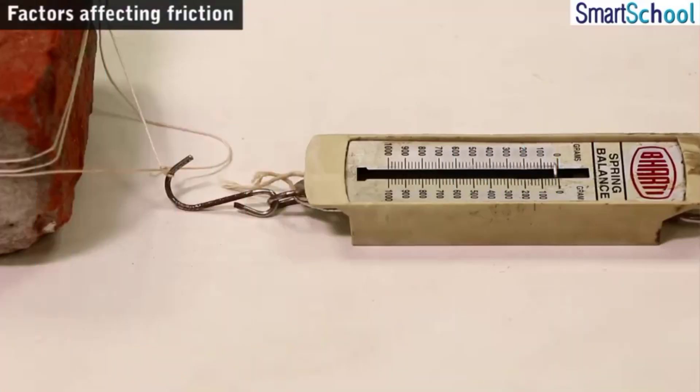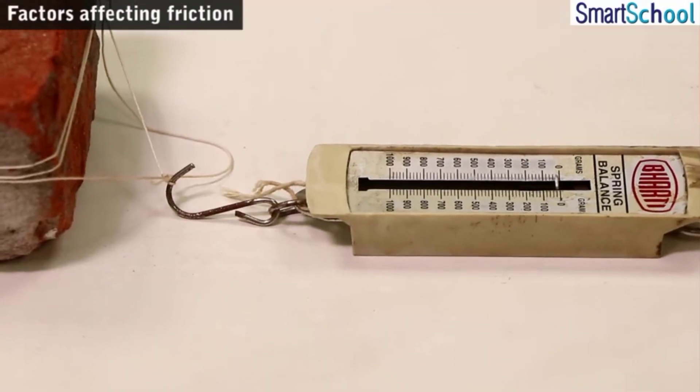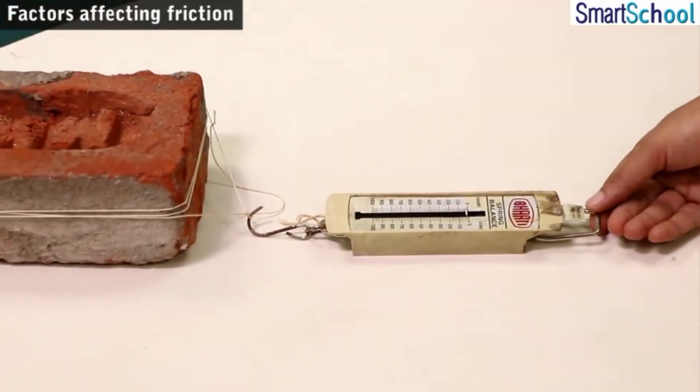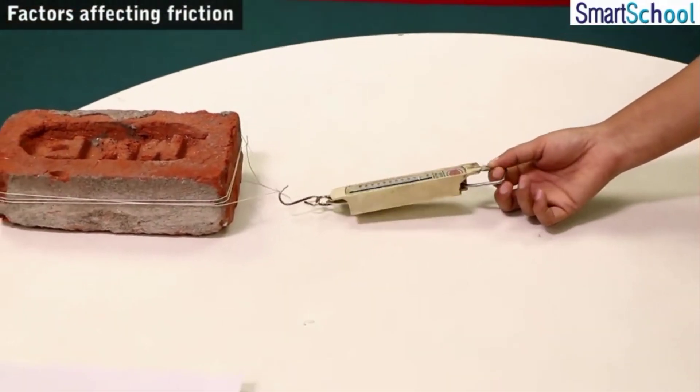Here we have a brick which is placed on a table, and now what we are going to do is attach this brick to a spring balance and try pulling this brick with the use of the spring balance.